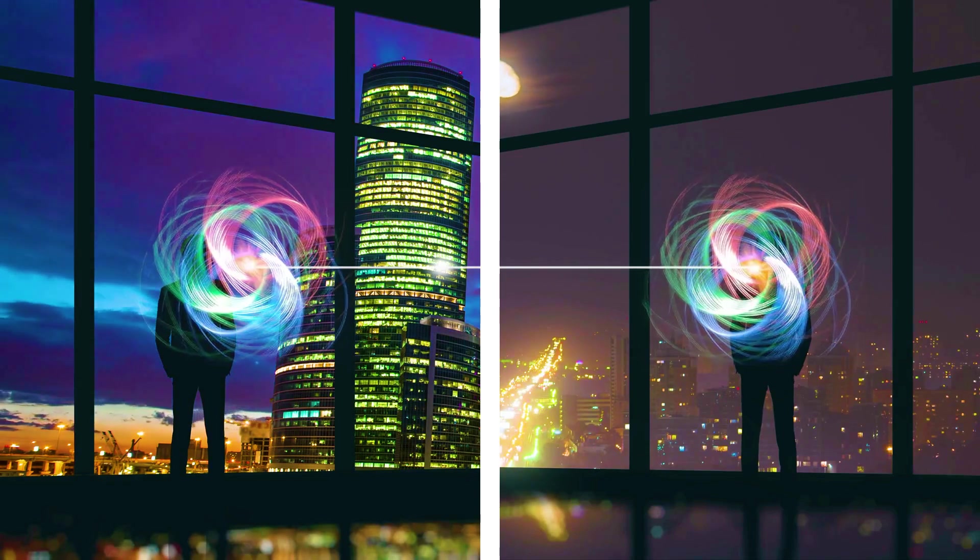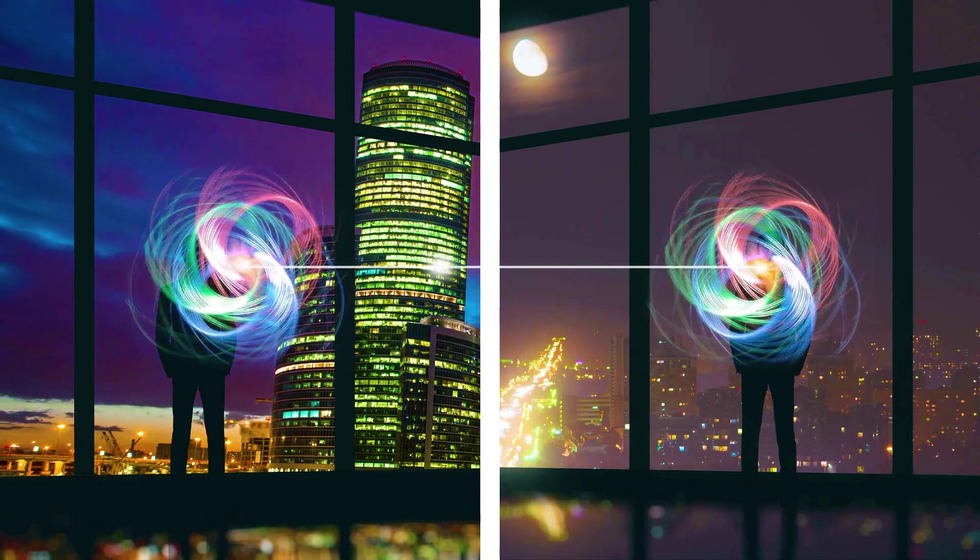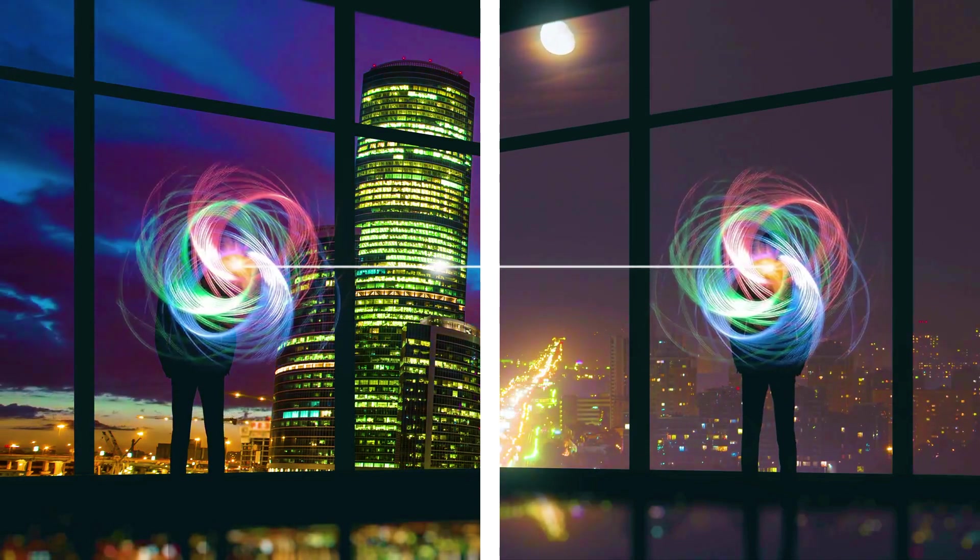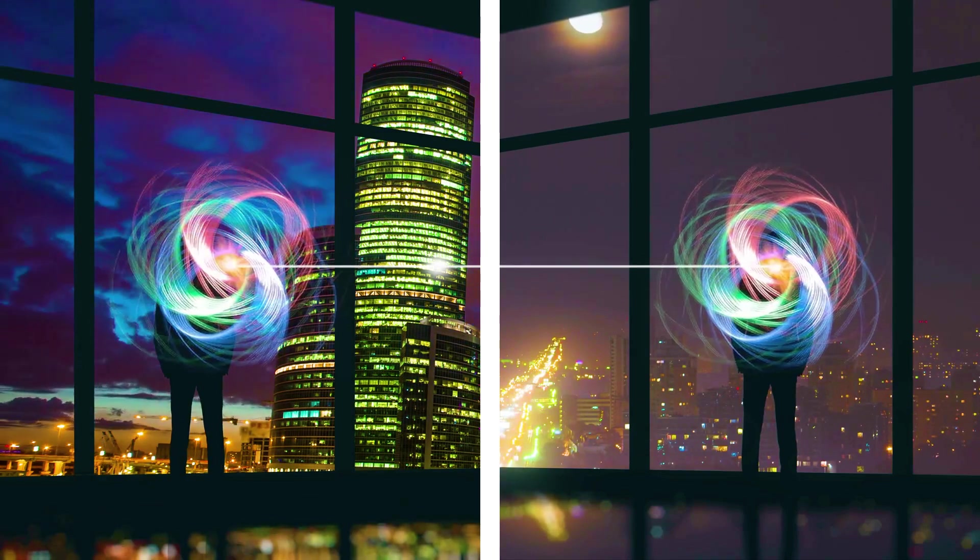Armed with the first guy's instructions, and half of the entangled pair, dude two performs some operations on his entangled particle, transforming his particle into an exact copy of the original particle that dude one wanted to teleport. Basically, dude two's particle takes on the state of the original particle, as if it were magically transported from dude one's location.